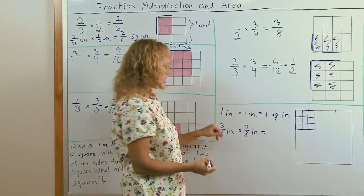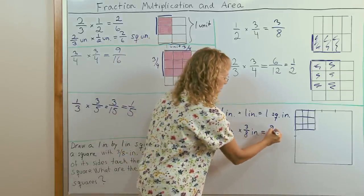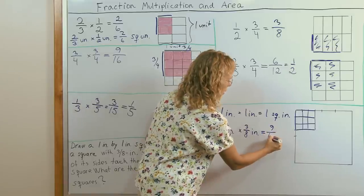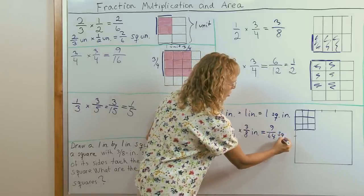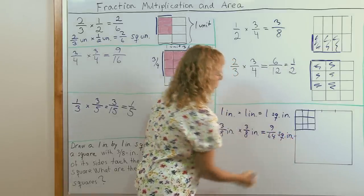Three times three is nine. And eight times eight is 64. And now our unit is square inches.